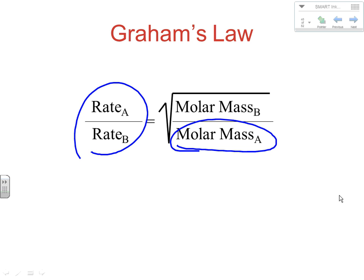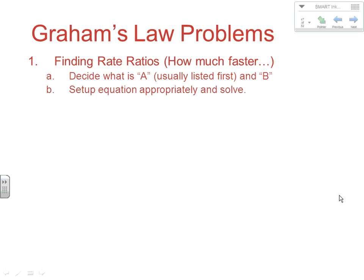Our general way of writing Graham's Law is: rate of A over rate of B equals the square root of the molar mass of B over the molar mass of A. Sometimes you're calculating the ratio of rates — how much faster does one gas effuse than another — and sometimes you're using it to find the molar mass of an unknown substance. Remember, the rate ratio is interchangeable with the effusion ratio and the diffusion ratio. When finding the rate ratio — say, how much faster is helium than neon — helium is A and neon is B. Because it's rate of A over rate of B, they're flipped on the molar mass side, so neon is on top and helium is on the bottom.